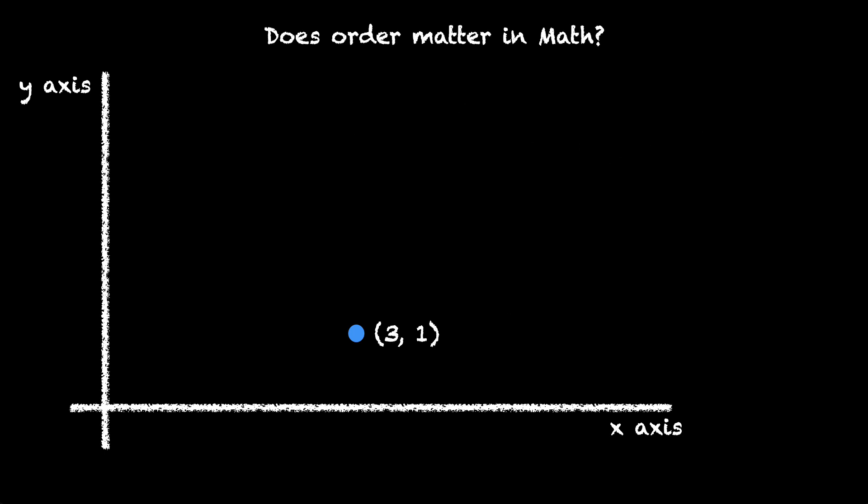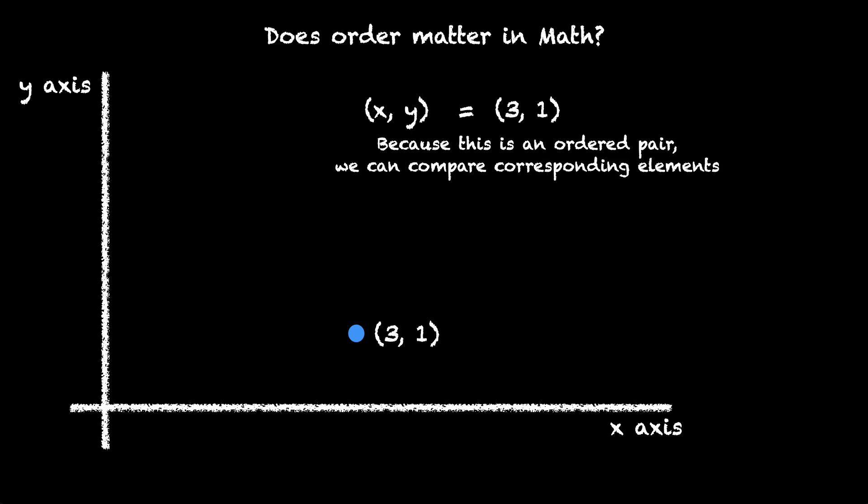And interestingly, we can also compare ordered pairs. We can say that (x, y), a point we don't know, is actually equal to (3, 1). These two ordered pairs are equal. And because these are ordered pairs, we can compare their corresponding elements. Using this, we can say that x equals 3, comparing their first elements.